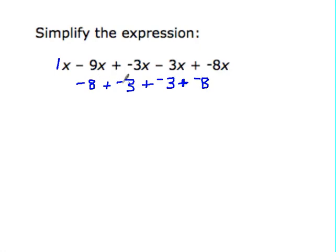Now we see they're all negative numbers, so we can add it for one of them. So 8 plus 3 is 11, 11 plus 3 is 14, and 14 plus 8 is 22. Remember it's negative, and it follows up with the x.